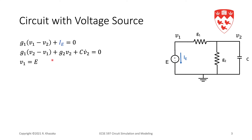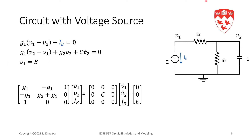Now we have three equations and three unknowns, and we can write these equations in matrix format. As a sanity check, we can verify the stamp of resistor G1: it's G1, -G1, -G1, G1 between rows 1 and 2, columns 1 and 2, because G1 is connected between node 1 and node 2. Capacitor C appears in the C matrix at row 2, column 2, since it's connected to node 2 and ground — both as expected.